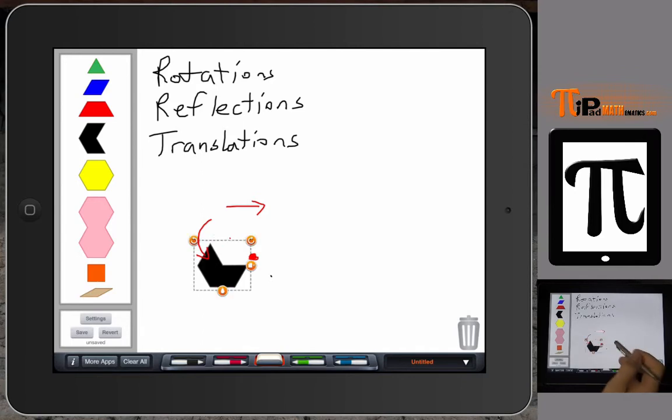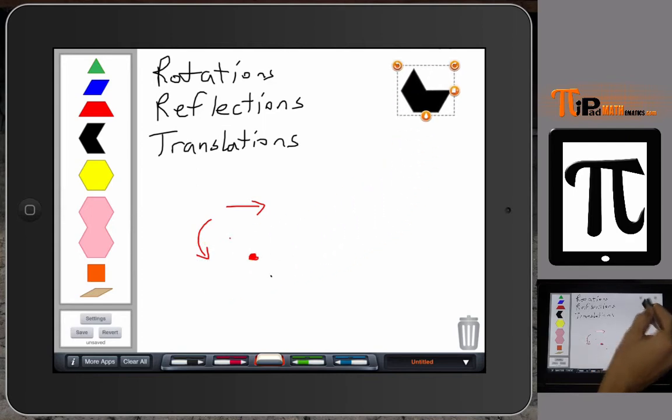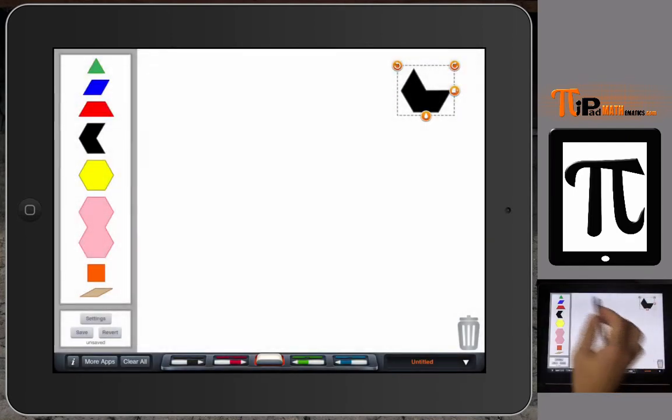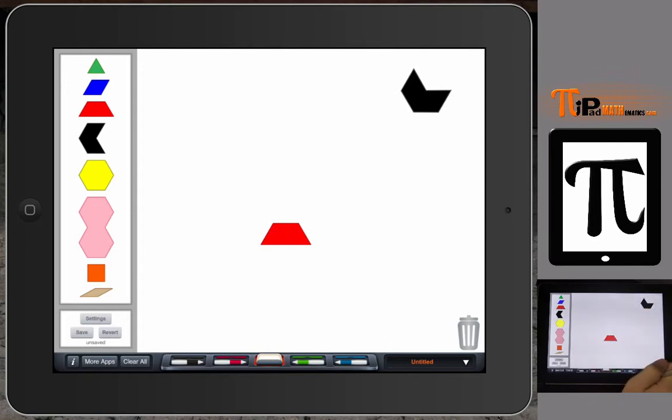And of course, if you have a basic pattern block set, you are not going to have this shape here. And we want to use shapes maybe that they can see. So we have our trapezoid, the one that they can manipulate at their desk. And we want to rotate about a point of rotation, which will be this vertex point here. And I want to rotate this direction.